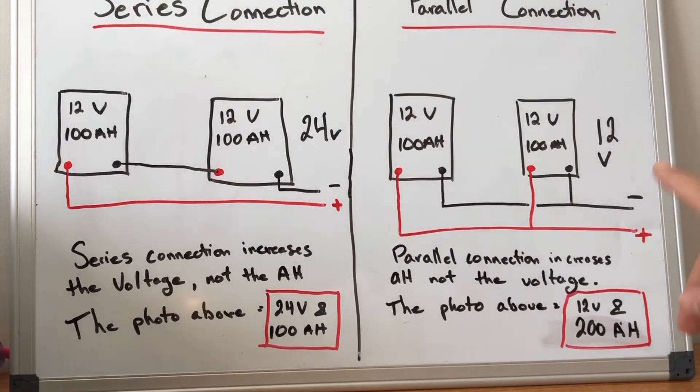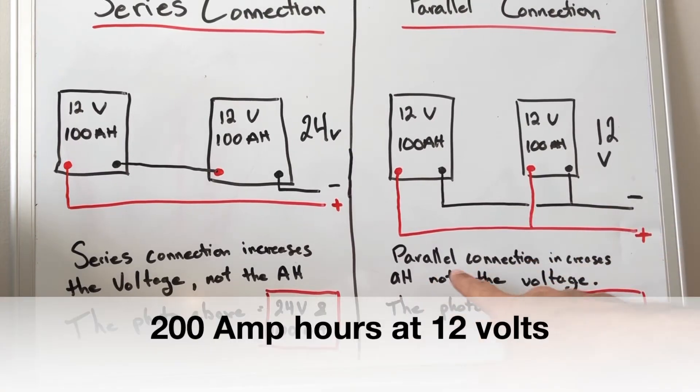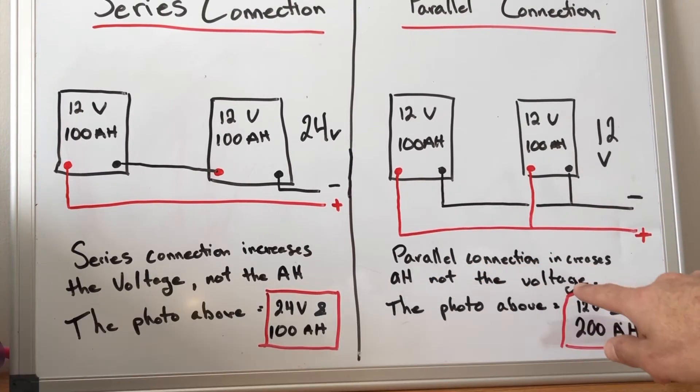Going over here to your parallel connection it's essentially the exact opposite. The voltage will remain the same but you're going to increase the usable amp hours of the battery bank. So as we can see here the parallel connection increases the amp hours but not the voltage.